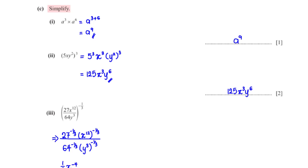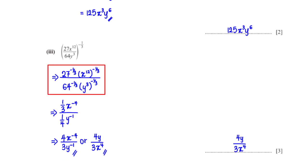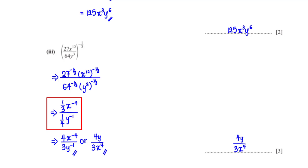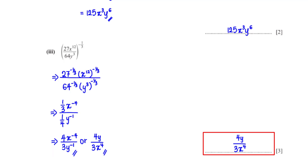Simplify (27x¹² over 64y³) all raised to the power negative 1/3. Applying the laws of indices: 27 raised to the power negative 1/3 is 1/3; x raised to the power 12 times negative 1/3 is x to the power negative 4; 64 raised to the power negative 1/3 is 1/4; y raised to the power 3 times negative 1/3 is y to the power negative 1. So 1/3 divided by 1/4 is 4/3, x⁻⁴ is 1/x⁴, and y⁻¹ is 1/y. Our final answer is 4y over 3x⁴.